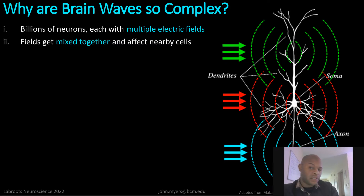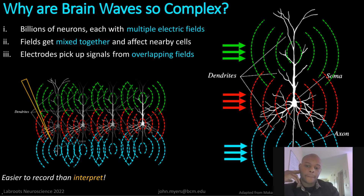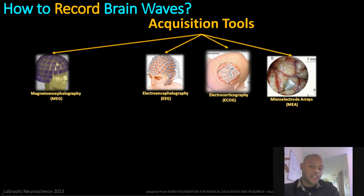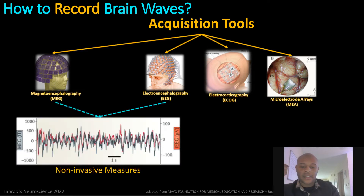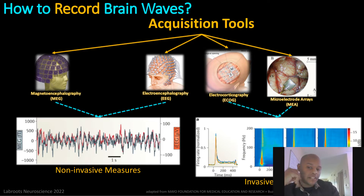When you add billions of neurons together, they get mixed together, and the signal becomes very hard to interpret for us on the back end. To record these brainwaves, we use many different acquisition tools, some being noninvasive and some being invasive. The noninvasive measures include magneto and electroencephalography, which are very similar measurement techniques.